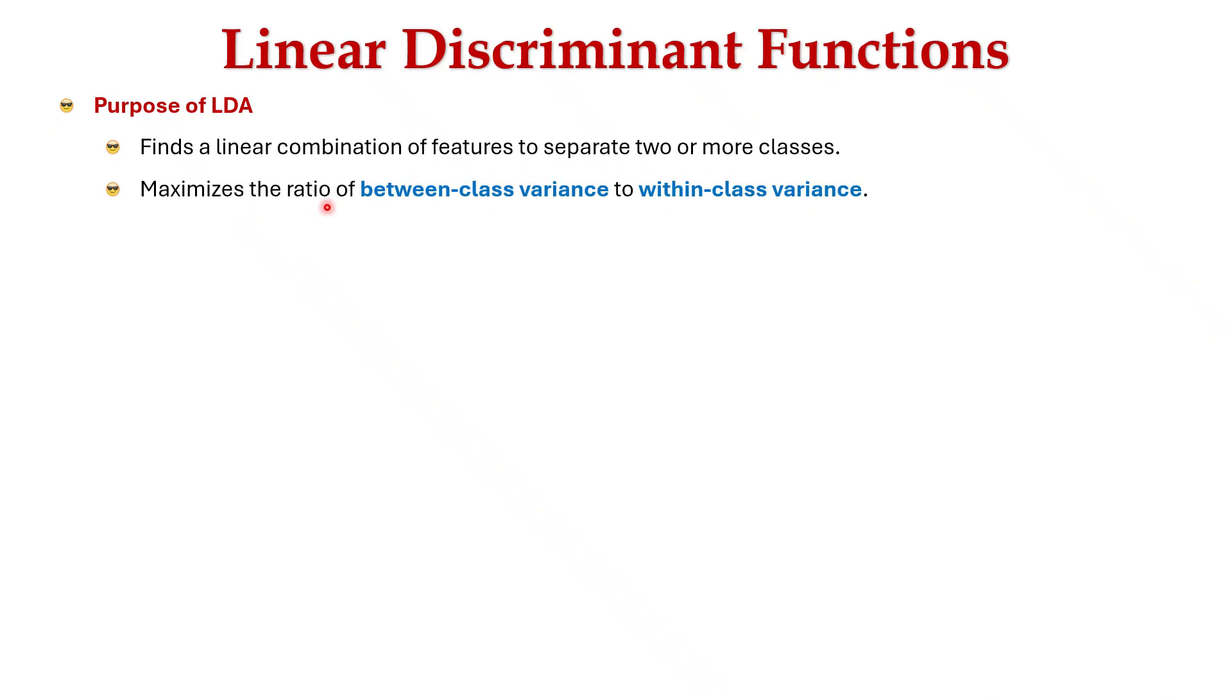It maximizes the ratio of between class variance to within class variance. It works by combining the features in a linear way and maximizes separation between groups while minimizing variation within each group.